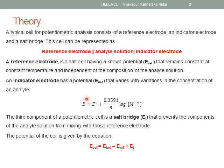The third component is the salt bridge. At the two ends of the salt bridge, a small potential is developed and that potential we call the junction potential. Overall, the EMF of the cell is equal to the potential of the indicator electrode minus the potential of the reference electrode, plus the junction potential.